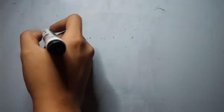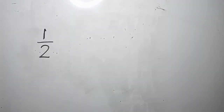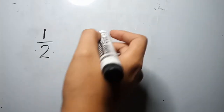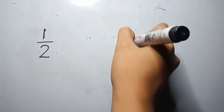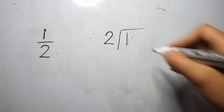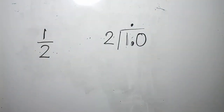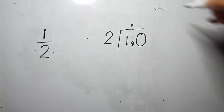Now let's have another example: 1 half. Using the same process, we divide the numerator by the denominator. Our numerator is 1 divided by our denominator, which is 2. Since 1 is less than 2, we add a decimal point and a zero to make our dividend greater than our divisor. Now we have 10 as the dividend and 2 as our divisor. 10 divided by 2 is equal to 5.